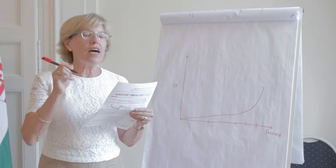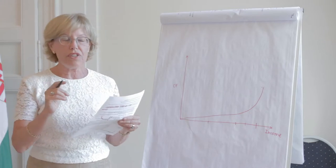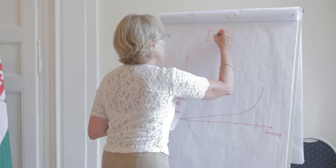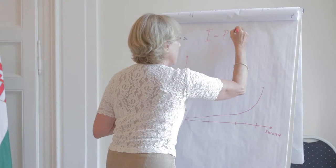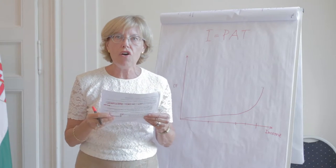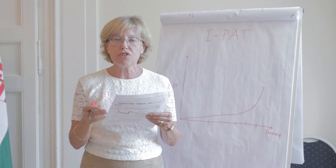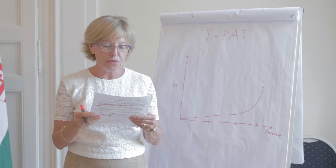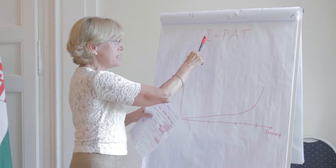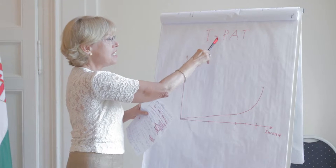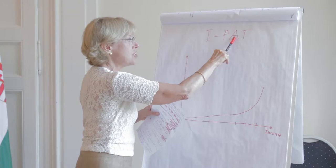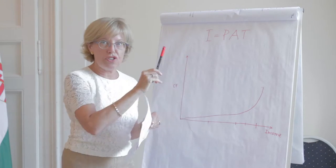Let me start with a venerable equation — we call it the IPAT equation, which most of you have seen. It was introduced in the 1970s by Holdren and Ehrlich, two scientists — one physicist and one ecologist in the US. Basically, this simple equation says that the impact — in other words, carbon emissions — is a product of the size of the population, the affluence of this population, and the type of technology that we use.